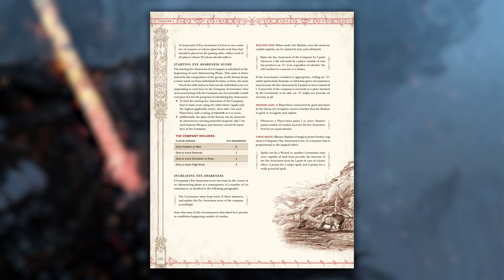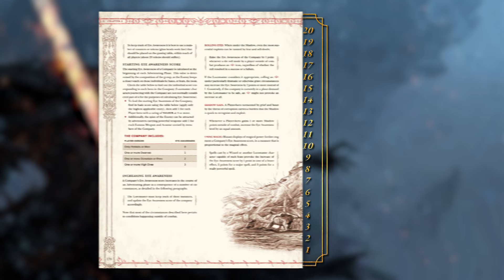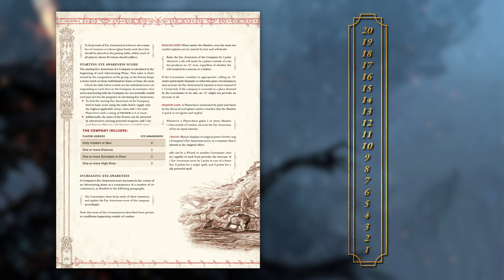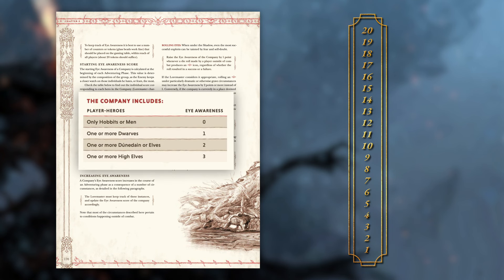The first step for the Eye of Mordor is to calculate the starting Eye Awareness score. This is done at the start of every adventuring phase, and the value is determined by the composition of the group. Sauron, if he is even aware of their people, is not concerned about a few hobbits strolling around the countryside — after all, what harm could that ever bring to him? However, Elves or Dunedain could be a cause for special attention. Using the table on page 170, select the basic score of Eye Awareness, and only use the highest applicable entry.